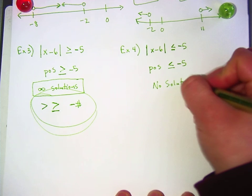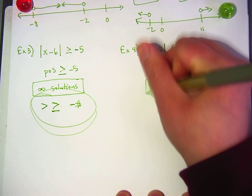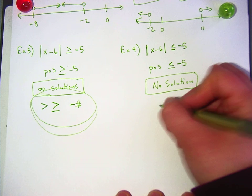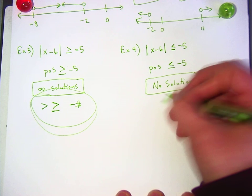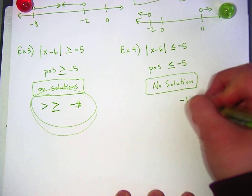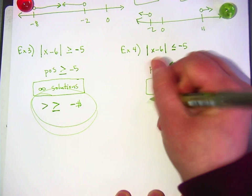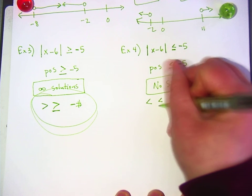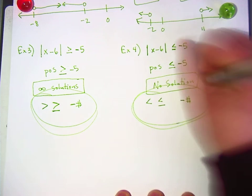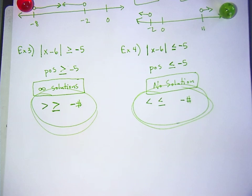All right. Now, tell me what I should write down here. What should you watch for? Go ahead. The negative and the less than. Right. It needs to be a negative number and it needs to be less than or less than or equal to. If you see those things, you don't have to show any work on those problems. Just write no solution.